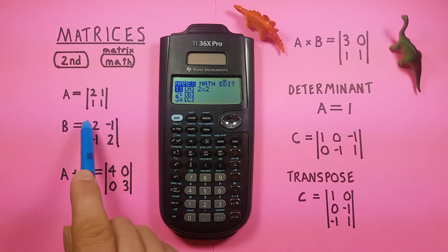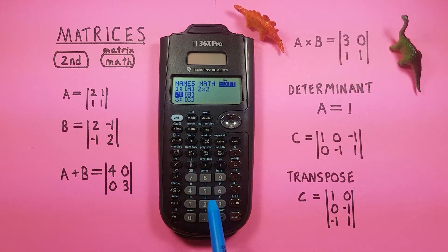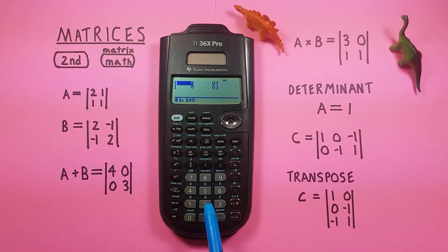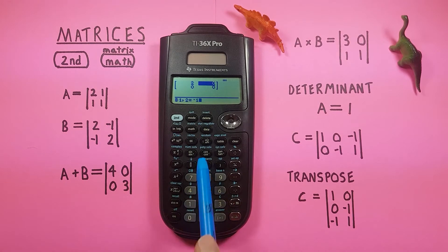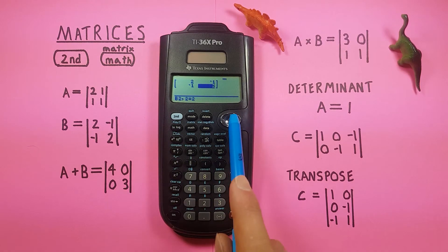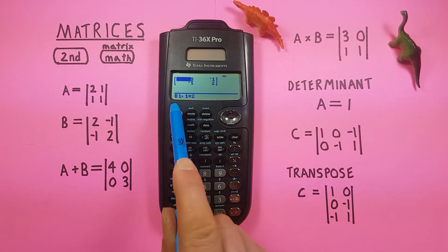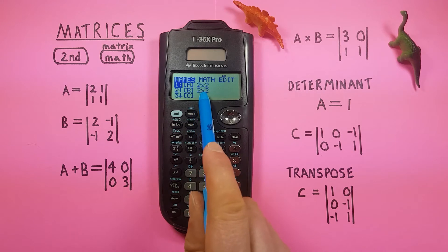Let's enter matrix B as well. Go back to the edit screen and scroll down to two, or just press two on the keypad. This is also a two by two matrix, so select two rows and two columns and press enter. Fill in the matrix — since some values are negative, use the negative key first. Enter negative one, negative one, negative one, and two. Once done, quit back to the starting screen. The matrix menu now shows B also has a two by two matrix stored.